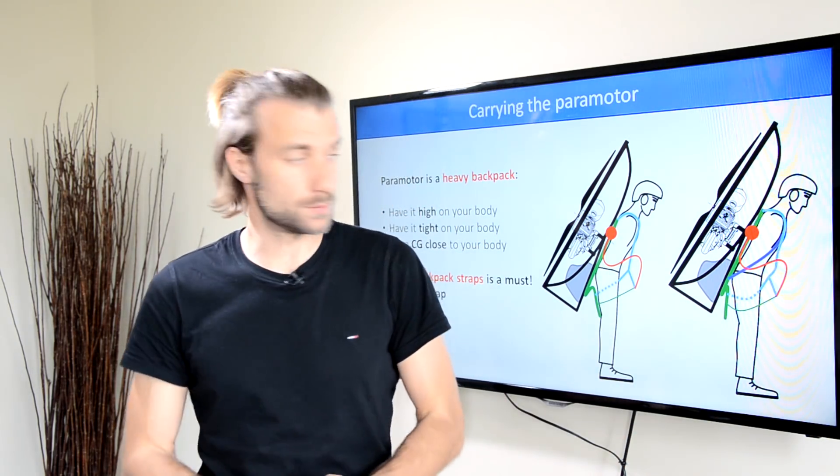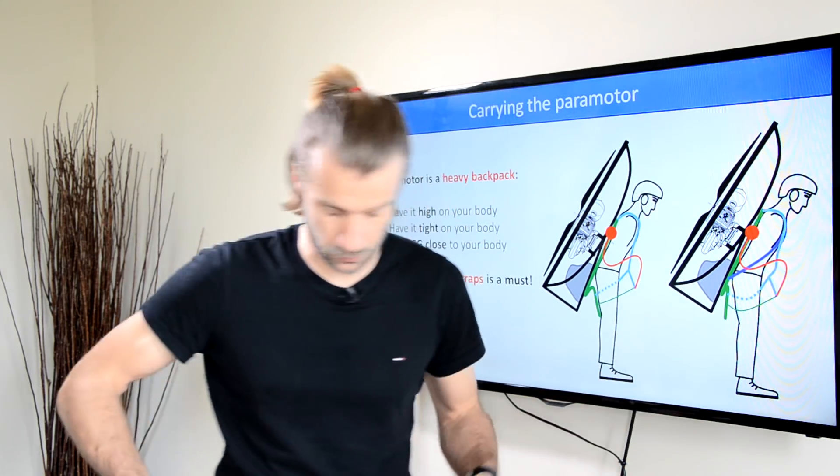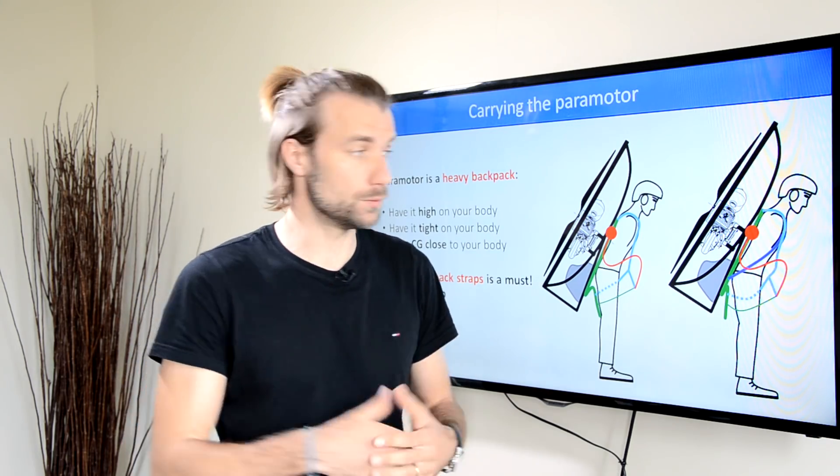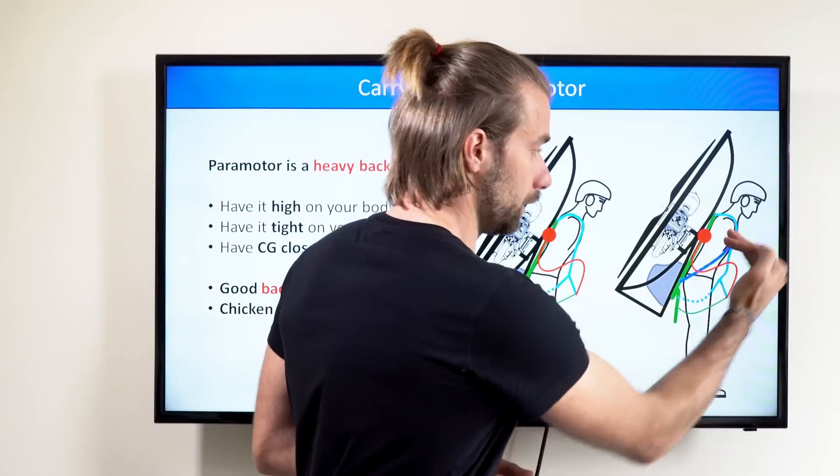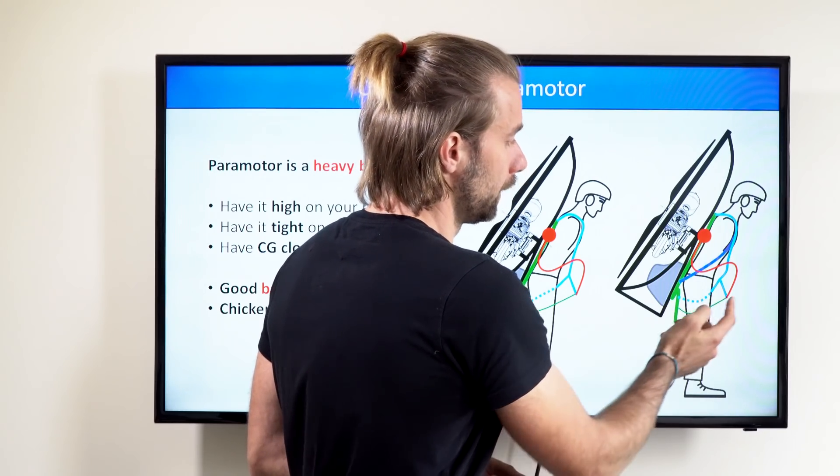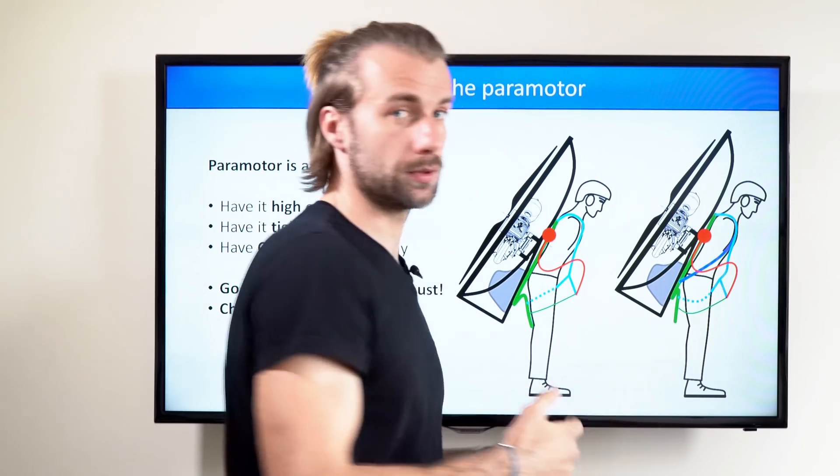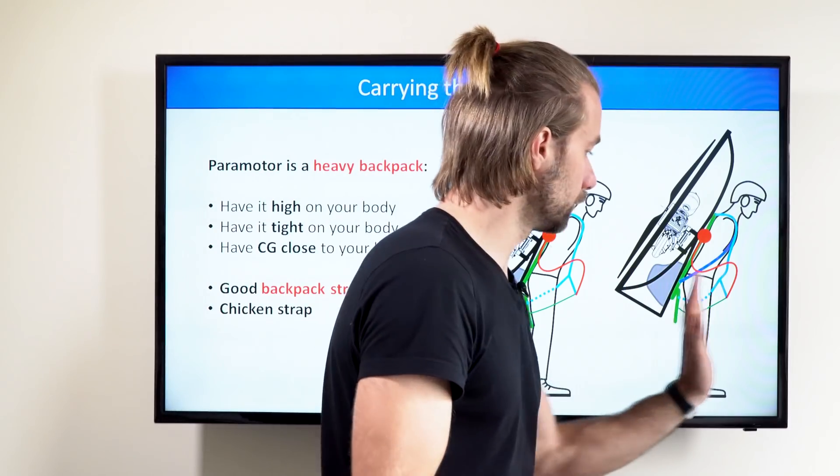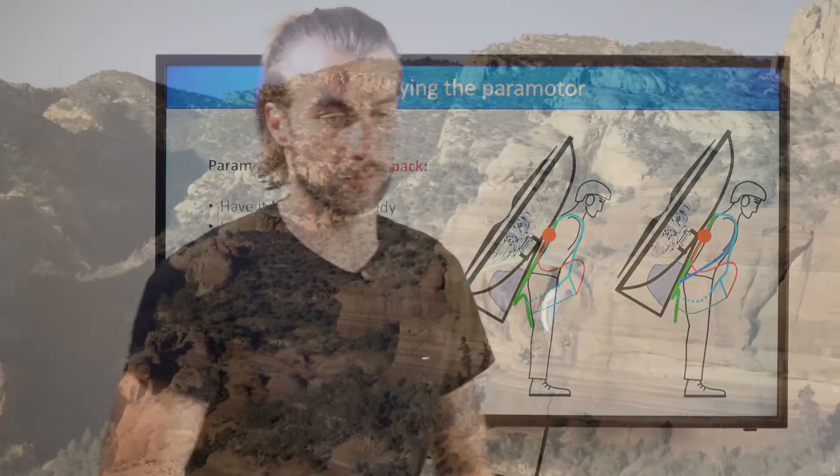So the leg straps that go between your legs are loose, and the bar is moving freely, and the seatboard strap that connects the bar and the seatboard is loose as well, so the seatboard is not pressing against your legs.